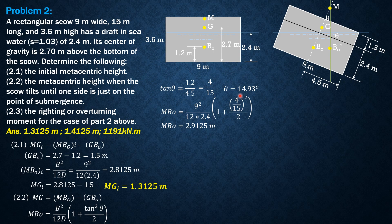So the metacentric height in the tilted position is 2.9125 minus 1.5 meters, so the metacentric height in the tilted position is 1.4125 meters.